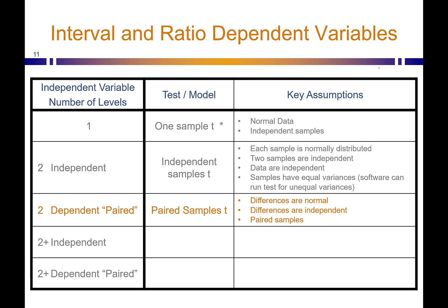Putting this on our table: we're working with interval and ratio dependent variables. We see if we have two paired levels for our independent variable — the same thing measured twice — we run a paired samples t-test. The key assumptions are that the differences are normally distributed, the differences are independent, and that our samples are indeed paired.